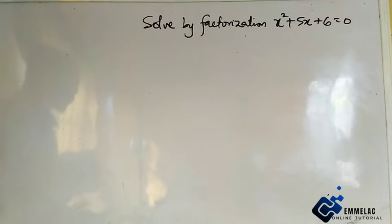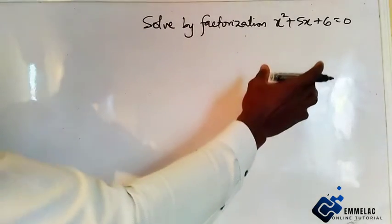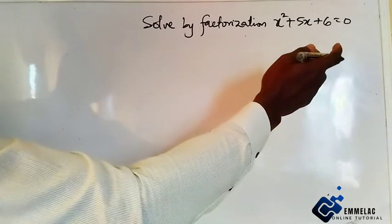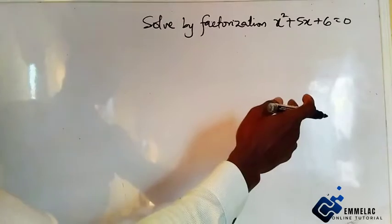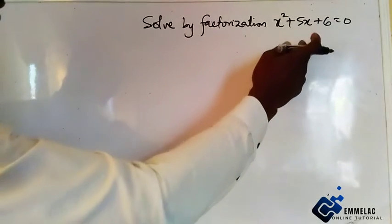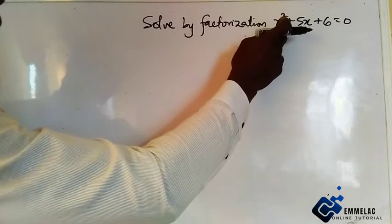All right, thank you. Let us see how we're going to solve this. First of all, this is a quadratic equation. For us to solve this, let us ensure that we find the factors which we multiply to give us six and we'll add to give us five. But before then, ensure that your x squared here is in unity.